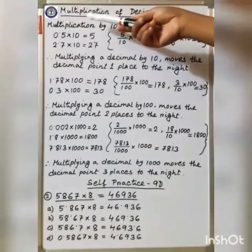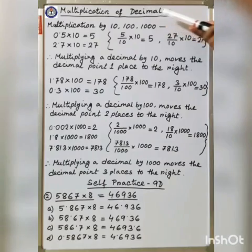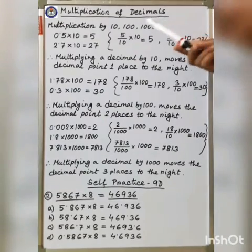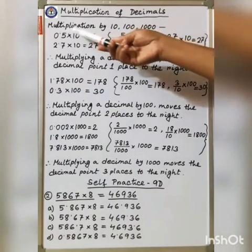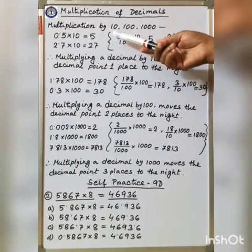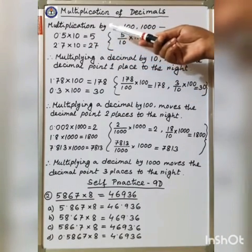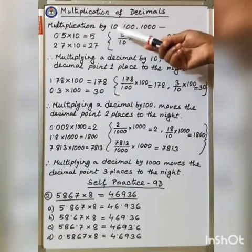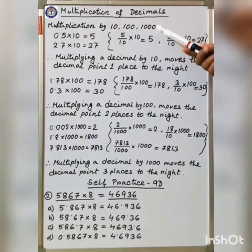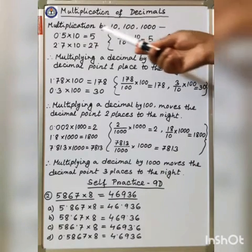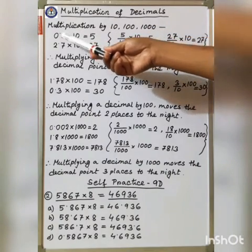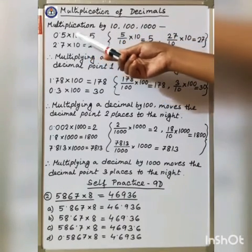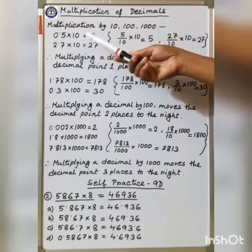Good morning students. Today I am going to teach multiplication of decimals. First, multiplication by 10, 100, and 1000. Let's start: 0.5 into 10.